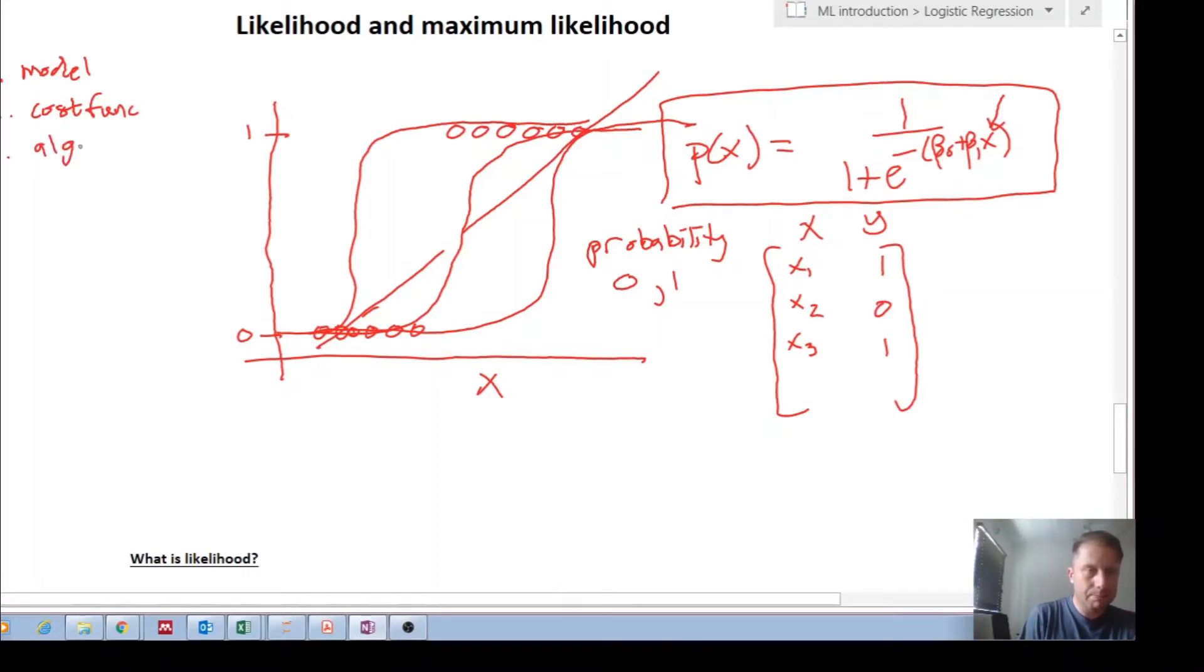So for linear regression, remember it looked like this: y equals beta zero plus beta one x. That's the model. And remember the cost function looked something like this: J is one over n times the sum from i equals one to n of y actual i minus y predicted i squared.